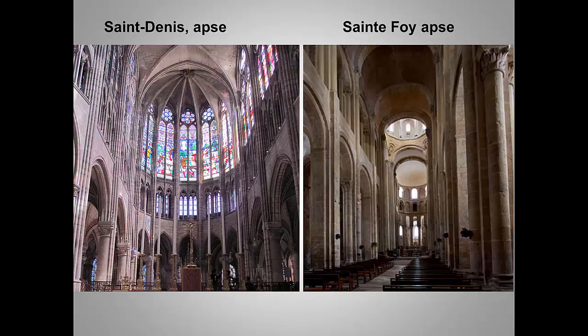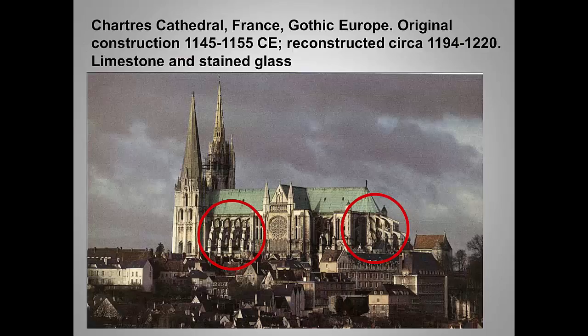Here's a comparative interior view. Let there be light. So how did they do it? How did they break up the thick stone walls and massive compound piers that had held up Romanesque cathedrals and puncture the sides with walls of glass? This required image of our required Gothic cathedral Chartres gives a big hint, which I've circled in parts to make an even bigger hint.